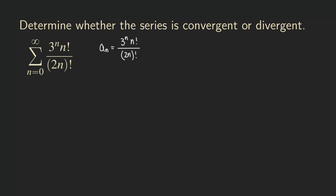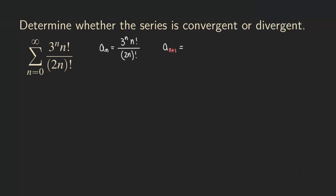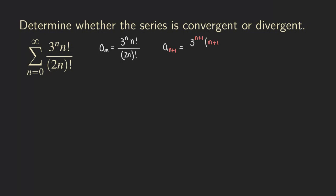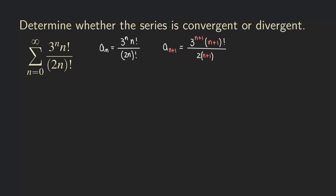Now what is the next term? The a_{n+1} term: wherever we see n we replace it by n+1, so the numerator becomes 3 to the (n+1) times (n+1) factorial. In the denominator we need to be careful — we put parentheses around (n+1) so the 2 gets distributed to both the n and the 1, giving 2(n+1), and then factorial.